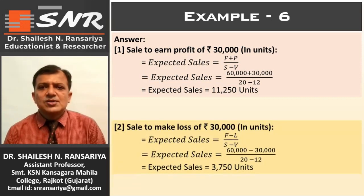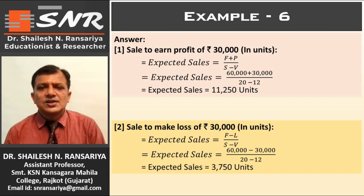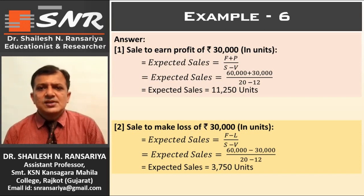Next, sales to make a loss of ₹30,000, also in units. Using the formula: Expected Sales = (F − L) / (S − V) = (60,000 − 30,000) / (20 − 12) = 30,000 / 8 = 3,750 units.